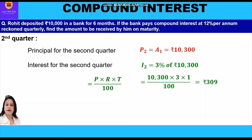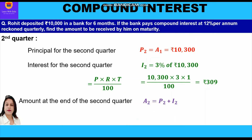To find the amount at the end of the second quarter, we add the interest and the principal: 10,300 plus 309 equals rupees 10,609. This is the amount Rohit will receive from the bank on maturity after six months.